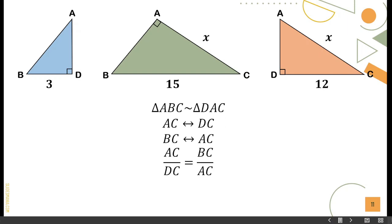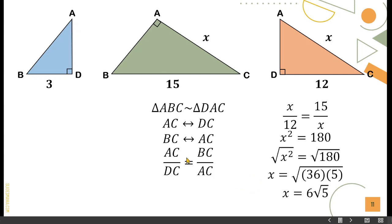If triangle ABC is similar to triangle DAC, then AC corresponds to DC and BC corresponds to AC. We have AC over DC is equal to BC over AC. Applying values: AC over DC is X over 12, and BC over AC is 15 over X. Cross multiply.